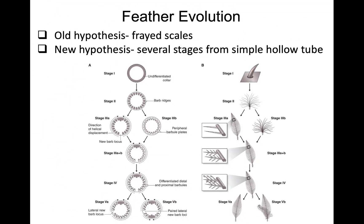How did feathers evolve? When discussing the evolution of a complex structure, natural selection requires each phase to be slightly more adaptive than the previous phase. The old hypothesis was that feathers derived from scales that became lighter and frayed to provide insulation and a flight surface. But genetically, feathers and scales are not actually homologous.